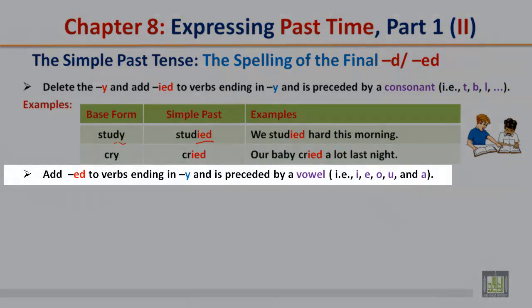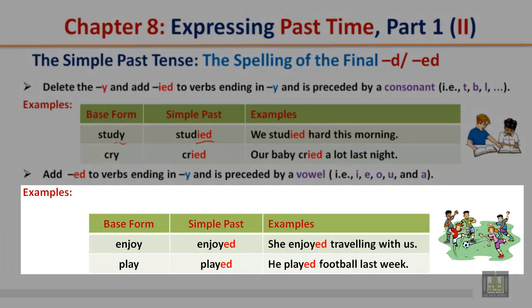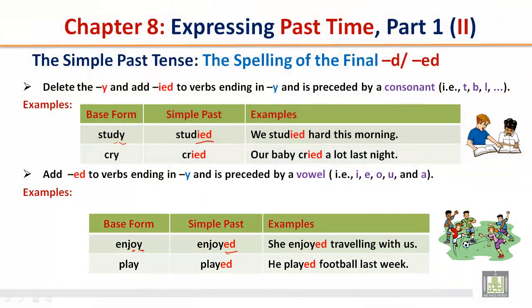Add ed to verbs ending in y that is preceded by a vowel. 'Enjoy' → 'enjoyed' with ed, because it ends in y but a vowel comes before it, so you simply add ed. Example: 'She enjoyed traveling with us.' Similarly, 'play' → 'played'. Example: 'He played football last week.'